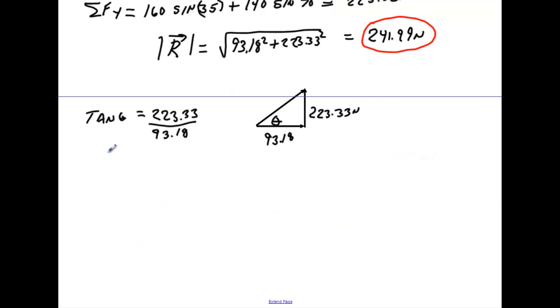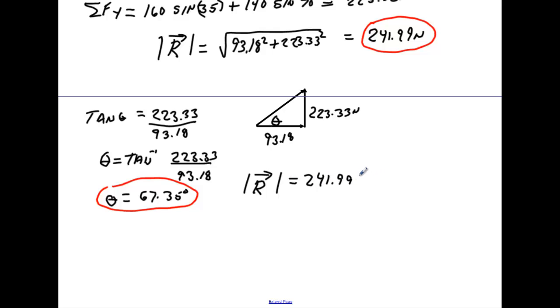And then we know that theta is equal to the inverse tan of 223.33 divided by 93.18. We run that through our calculator, and we'll find that theta is equal to 67.35 degrees. So at this point, we have our magnitude, and we have our angle. So the R vector is equal to 241.99, and you've got to include the units. So we include newtons, and the angle is 67.35. And we'll circle that in blue, and that is your answer.